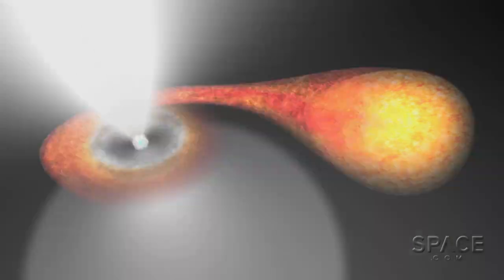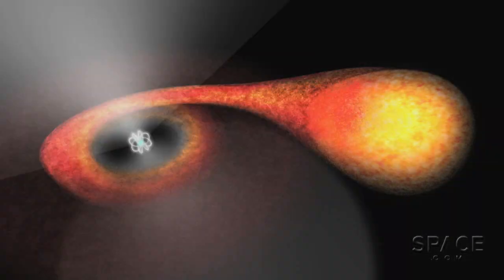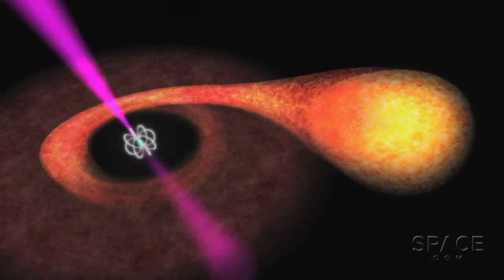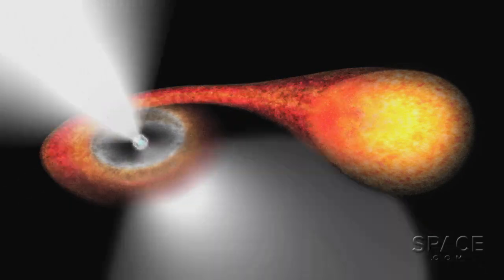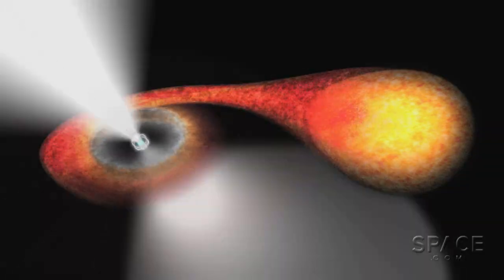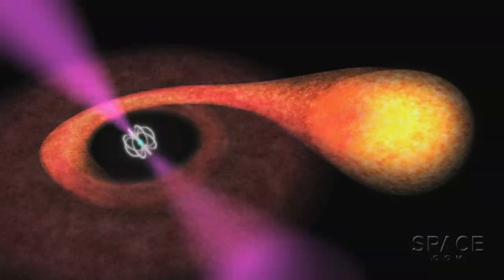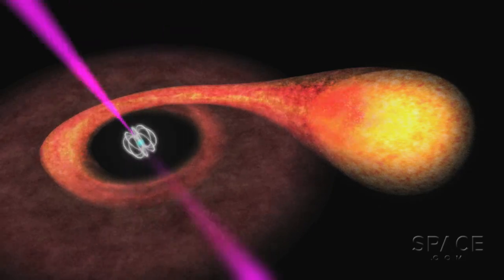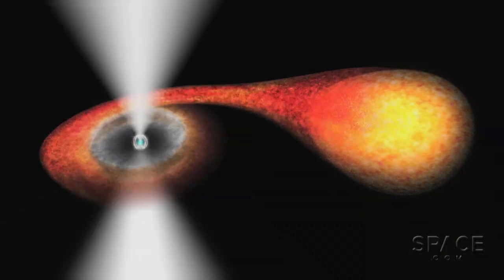Then it recovers its composure as its magnetic field again asserts protection from the companion star's less vigorous insults, until the next cosmic sibling squabble erupts. The whole cycle can take just a few weeks and then repeat over and over again.